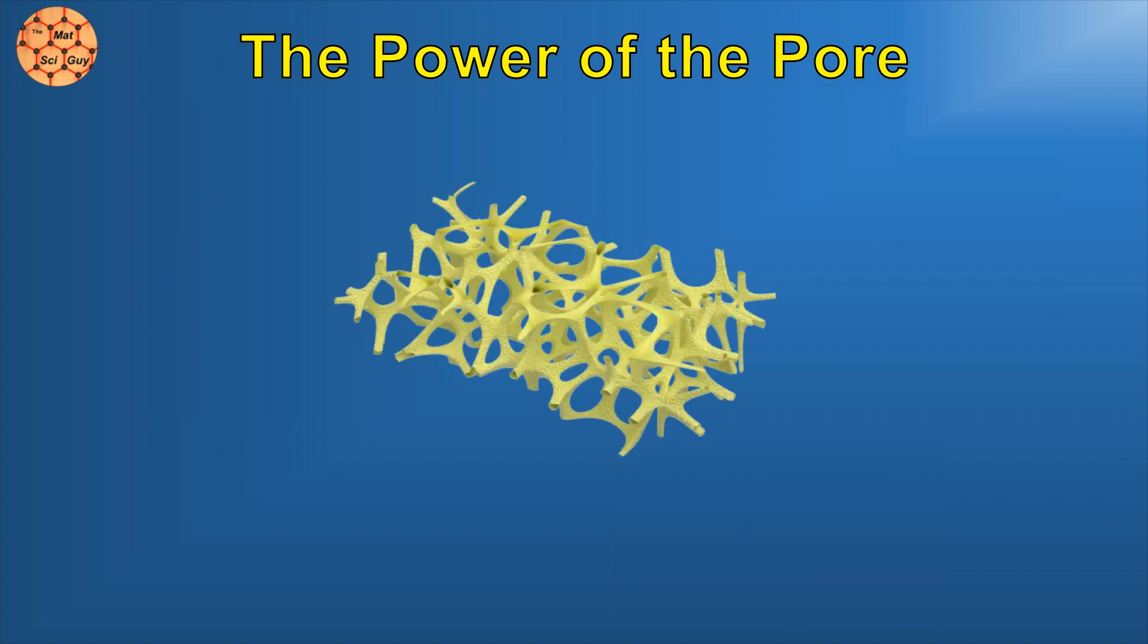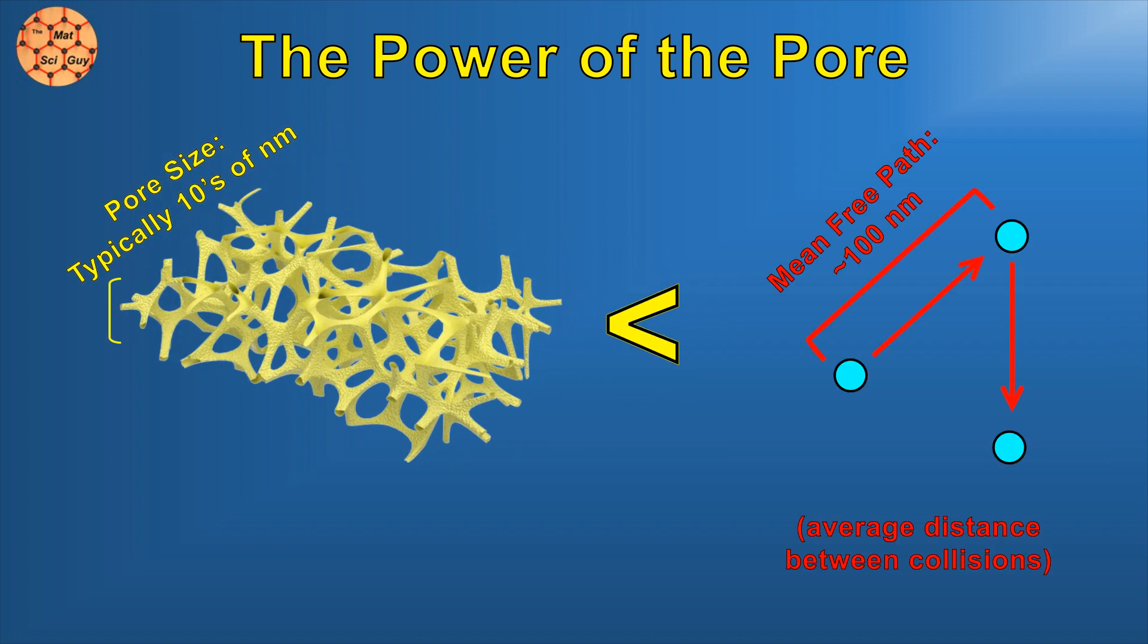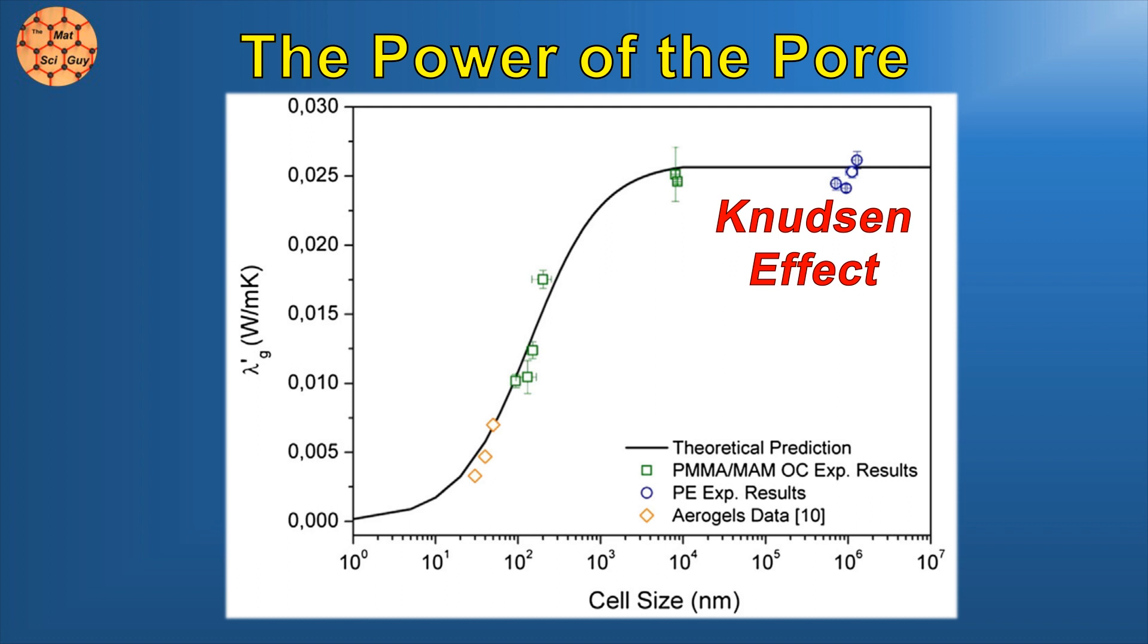You see, an aerogel's pores are quite small, so small that they can be smaller than the mean-free path of air molecules. In this regime of tiny pores, we observe a phenomenon known as the Knudsen effect, where diffusivity of a gas decreases, dramatically reducing thermal conductivity along with it.